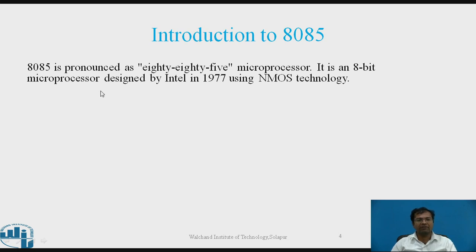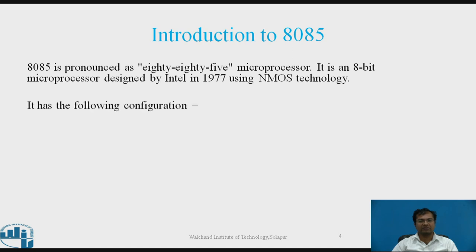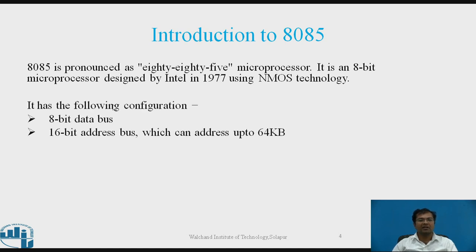The 8085 is called the 8085 microprocessor. It is an 8-bit microprocessor designed by Intel in 1977 using NMOS technology. It has an 8-bit data bus which carries 8-bit data, and a 16-bit address bus which can address up to 2 raised to 16, that is 64 KB.